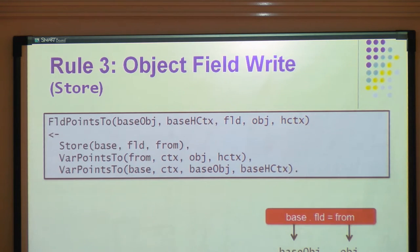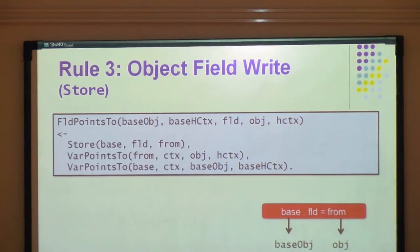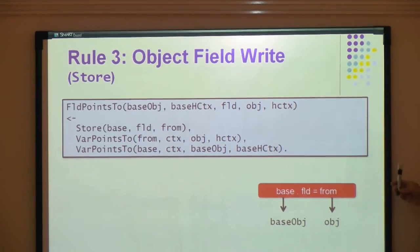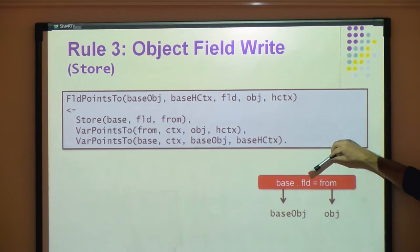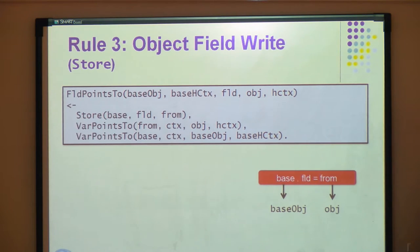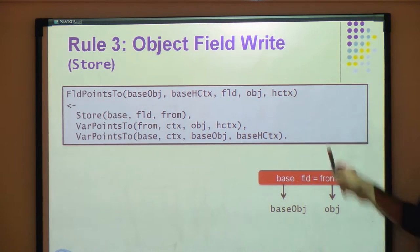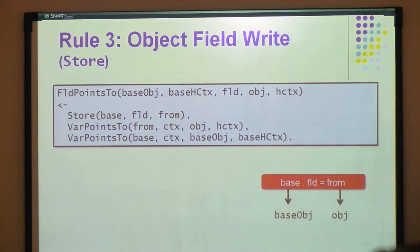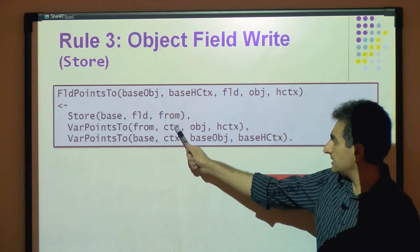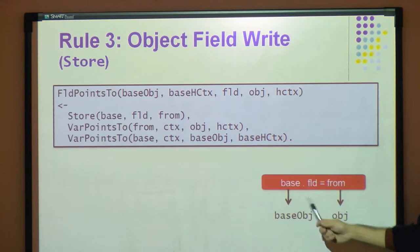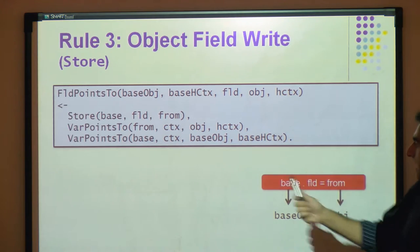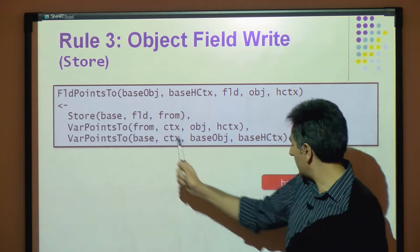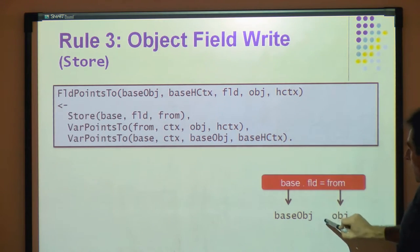The next rule doesn't have anything fancy — it's the transitive closure rule from yesterday with context. If I have a move instruction from a 'from' variable to a 'to' variable, and I have already proven that 'from' points to OBJ when the variable is qualified by CTX (this common context), and OBJ is qualified by this heap context, then I know that 'to' points to OBJ under the same context.